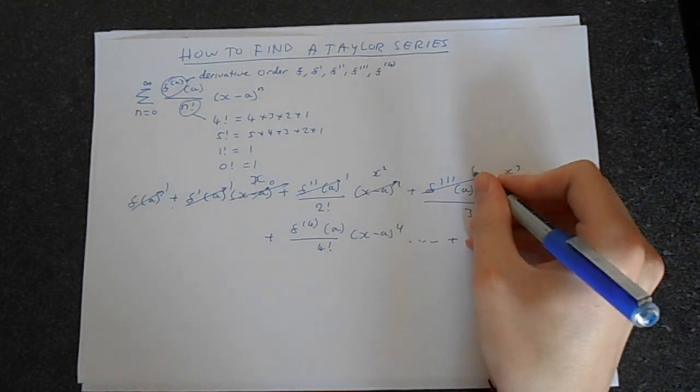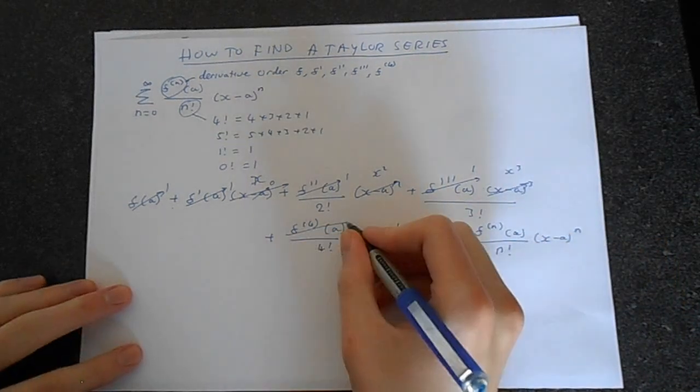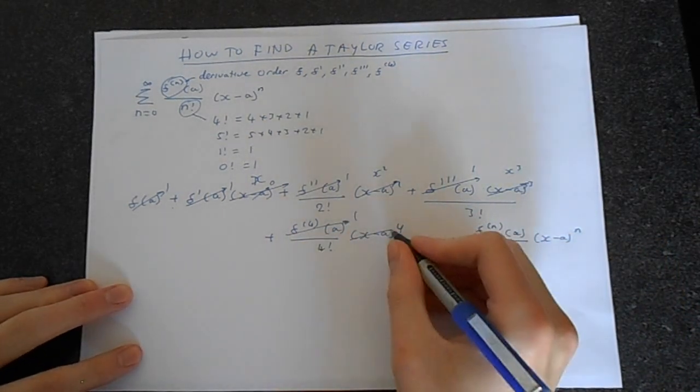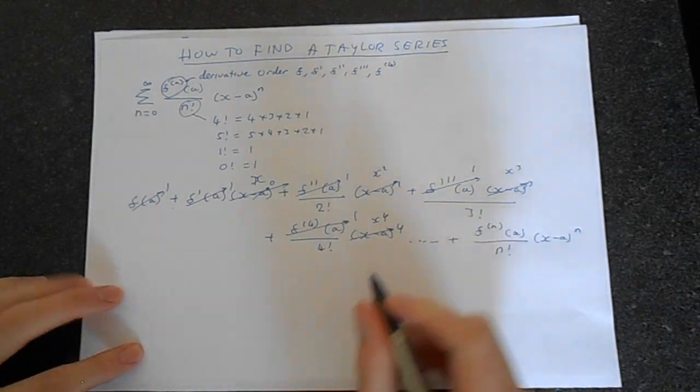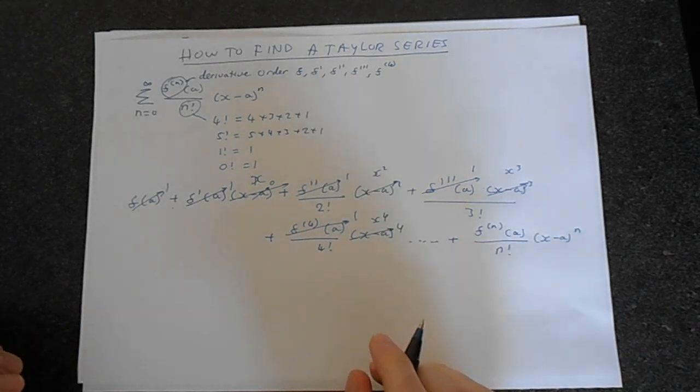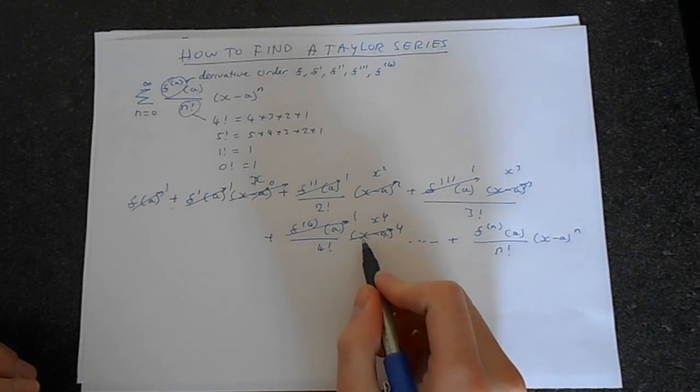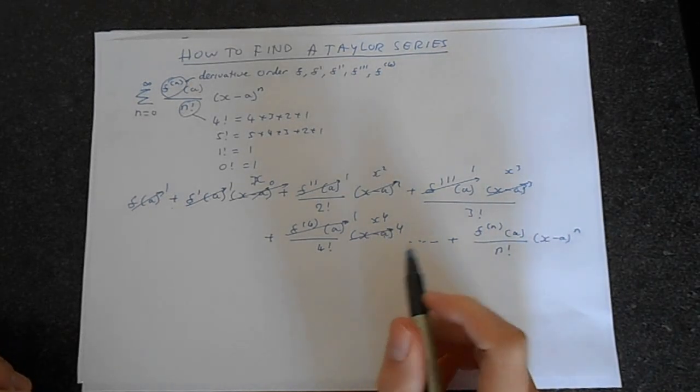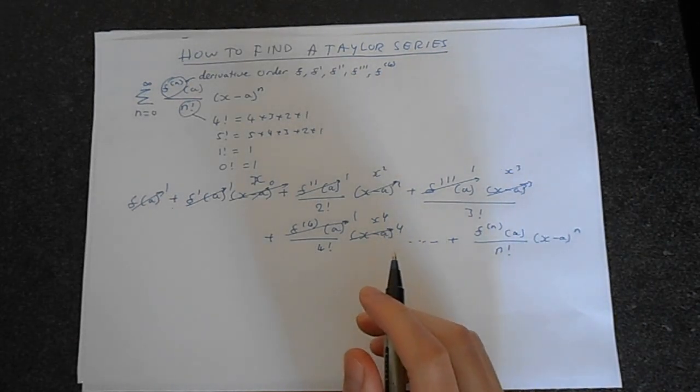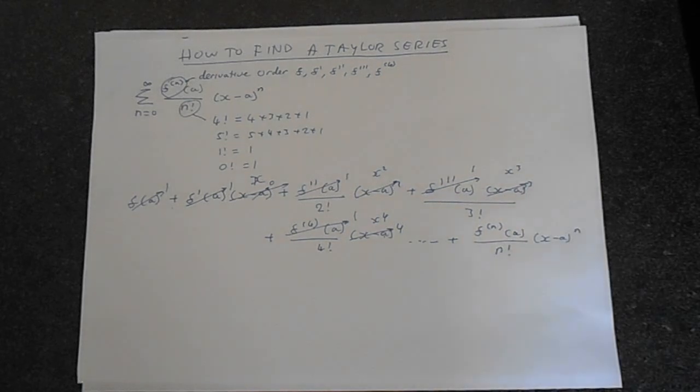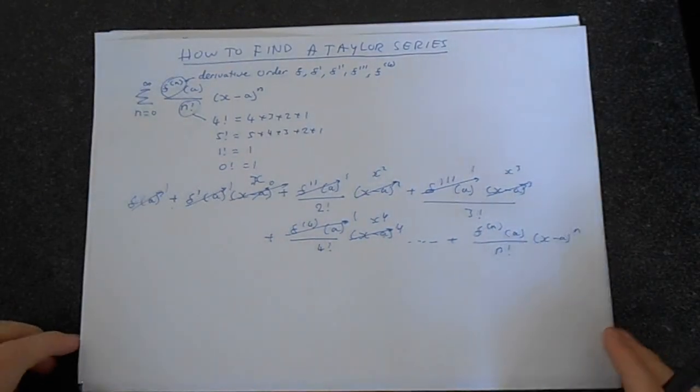This is going to be 1. This is going to be 1 again. And this is going to be x to the 4th. So you see how I've done this? These are going to be all 0, and these are all going to be 1. So it's just x to the power n. You should be noticing a pattern here.